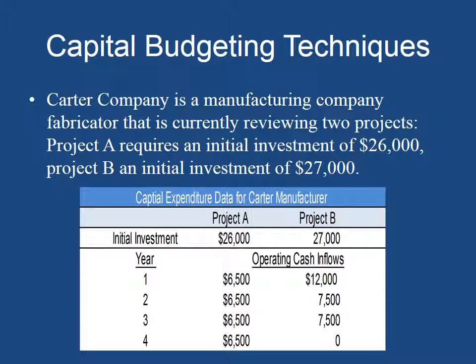Here's another example. I have two projects for Carter Manufacturing — Project A and Project B. The initial investment for Project A is $26,000 and for Project B it's $27,000. Notice the cash inflows for years one through four. For Project A, it's a consistent amount across the years — $6,500. But for Project B the operating cash inflows vary: year one is $12,000, year two is $2,000, year three is $3,000, and year four is zero because I recouped all my money within year three. So if you had to pick between the two, you would pick Project B because you get your money back faster than Project A.